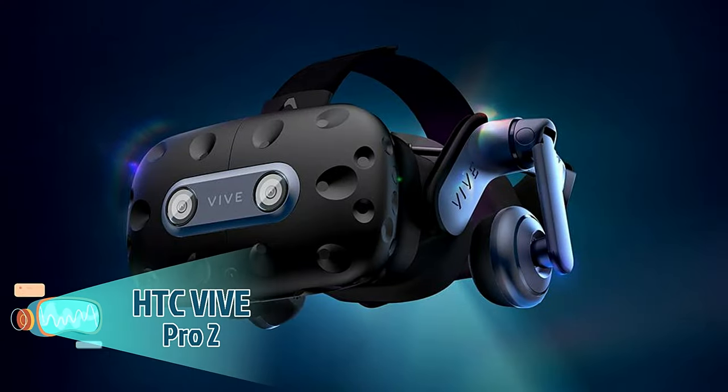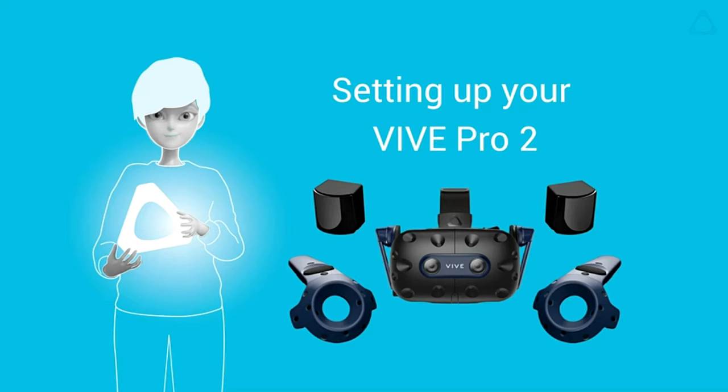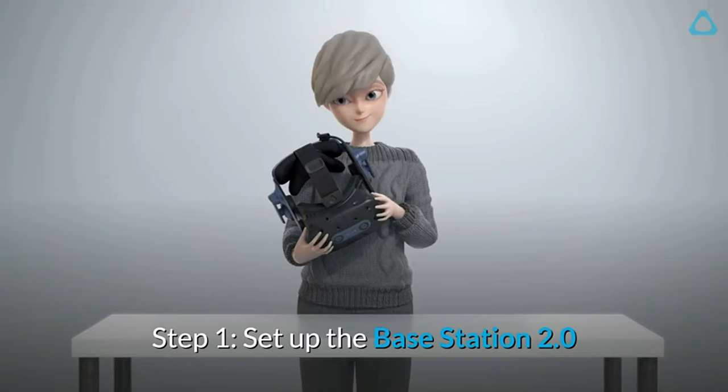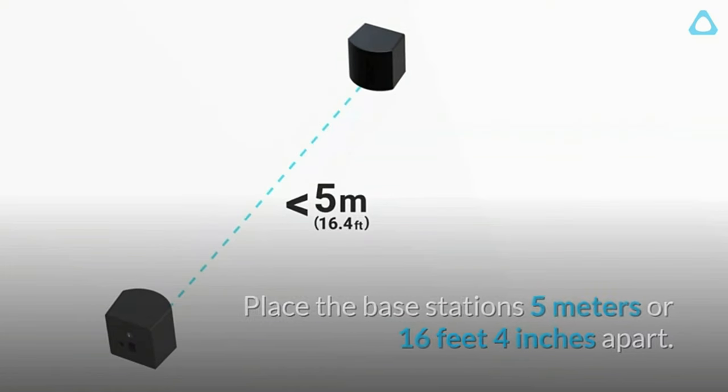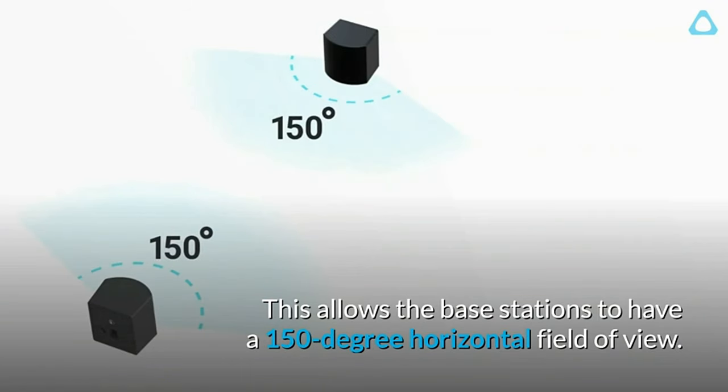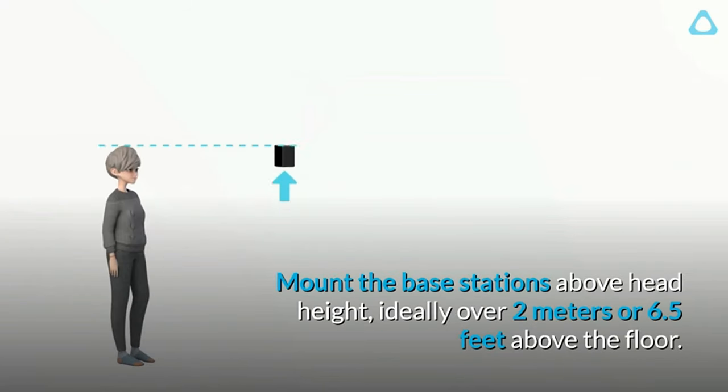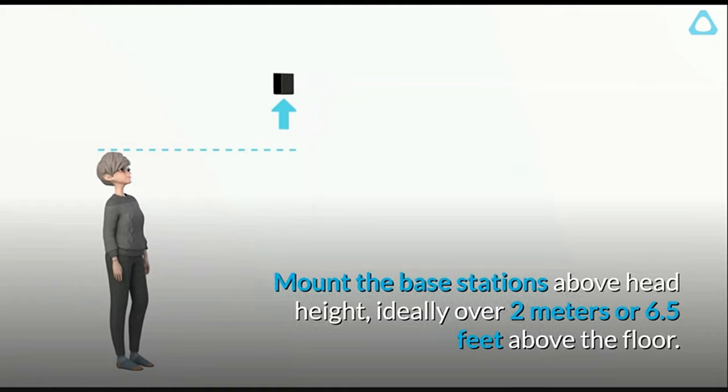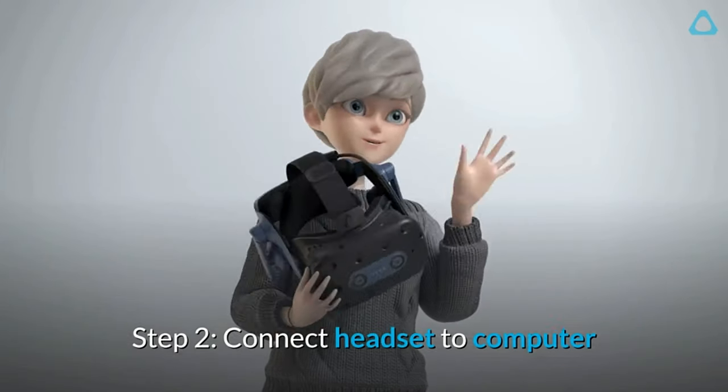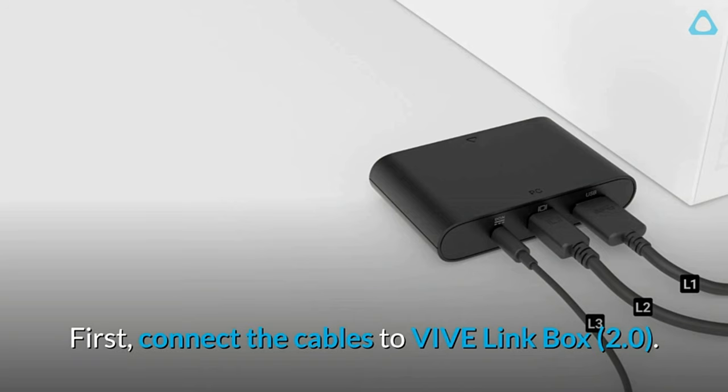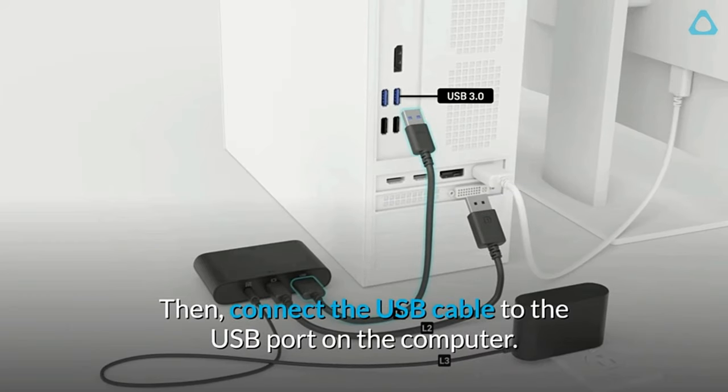Number 4: HTC Vive Pro 2. The HTC Vive Pro 2 Virtual Reality System gives you a visual experience like no other, with 5K sharpness that makes everything look amazing. Its clarity of 4,896x2,448 and wide 120-degree field of view are similar to human vision, which makes your virtual exploration better.